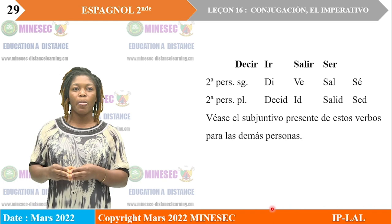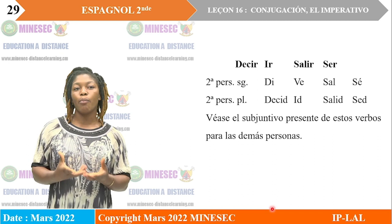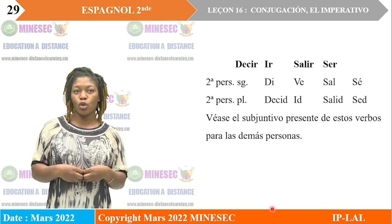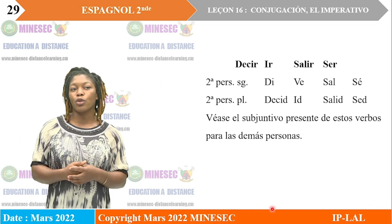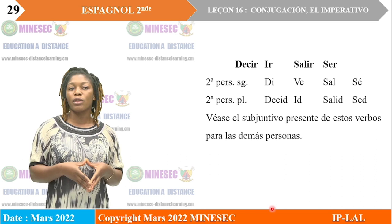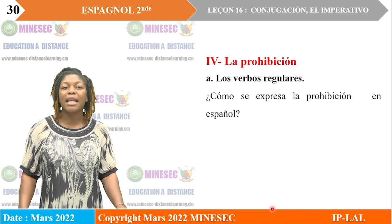Tenemos también decir, ir, salir y ser. Decir - di tú, decid vosotros. Ir - ve tú, id vosotros. Salir - sal tú, salid vosotros. Ser - sé tú, sed vosotros. Hay que ver también el subjuntivo presente de estos verbos para las demás personas.